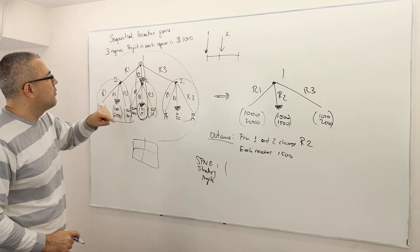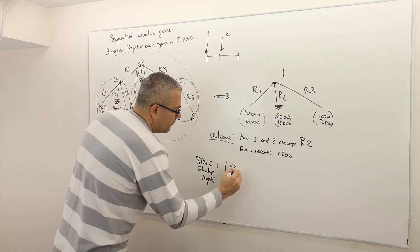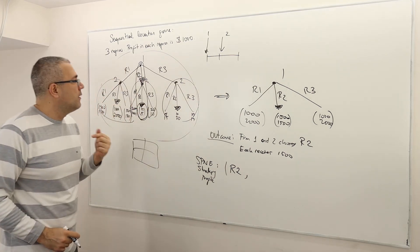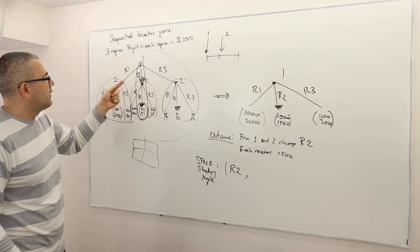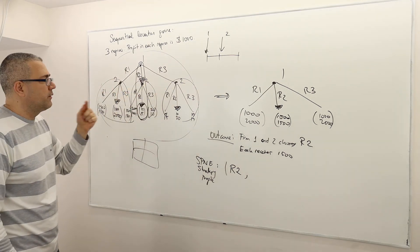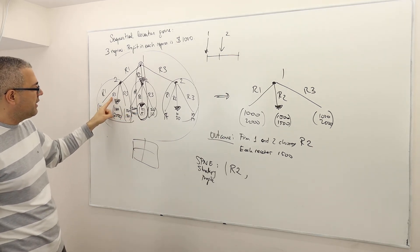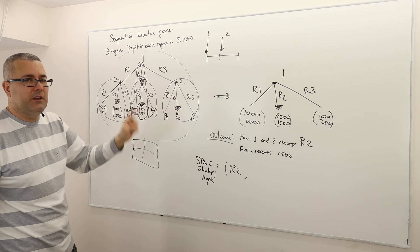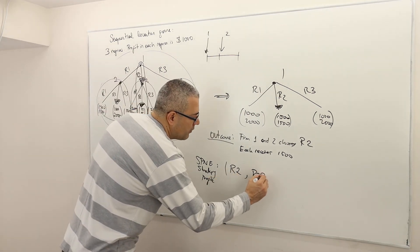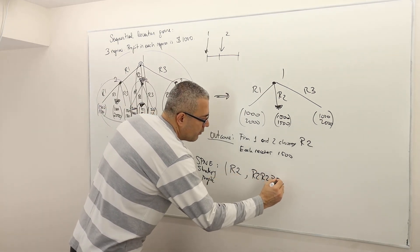What is the strategy for player one? Well, he's going to play R2. But don't forget, there are three subgames for decision nodes for player two. So therefore, you have to tell me what she's going to do here, what she's going to do here, what she's going to do here. And it is R2, R2, R2.